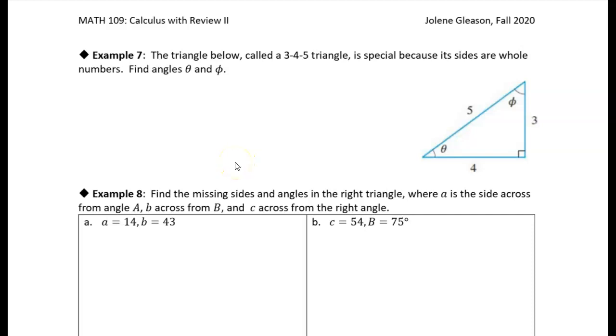In example seven, we're given the three-four-five triangle, one of the Pythagorean triples. Beautiful triangle. It's special because the sides are whole numbers, and we want to find the angles.